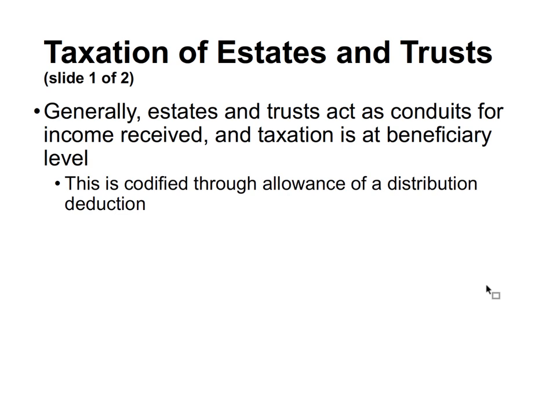Generally, estates and trusts act as conduits for income received, and taxation is at the beneficiary level. Think of it like a partnership or S corporation flow-through, but you still have to work through the accounting income and taxable income of the actual entity — the estate or trust. An estate or trust is its own separate taxpayer, separate from an individual, even though it's a flow-through conduit. This is codified through the allowance of the distribution deduction.